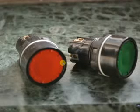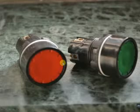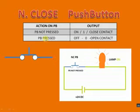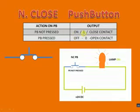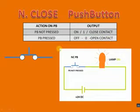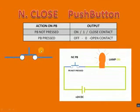Now let's see another push button: normally closed. In a normally closed push button, you can see a truth table. Earlier you saw a normally open push button. In a normally closed, when you are not acting on it or not pressing it, it will show an ON condition — logic 1 or a closed contact. When you press the push button it will show OFF, or 0, or open contact. This is the symbol — the path is connected normally, which is why it's called a normally closed push button.